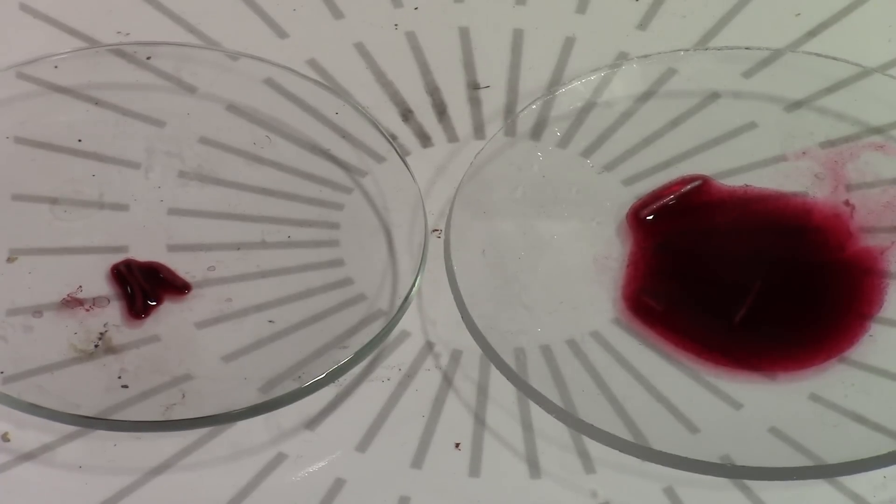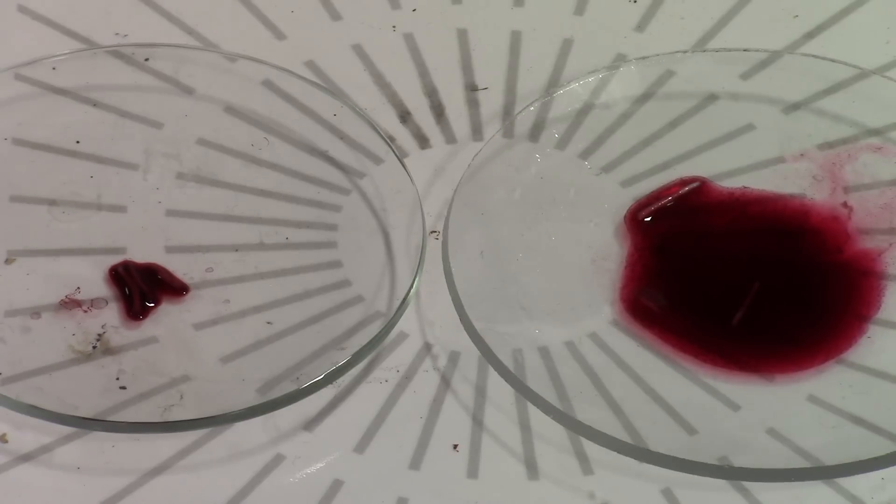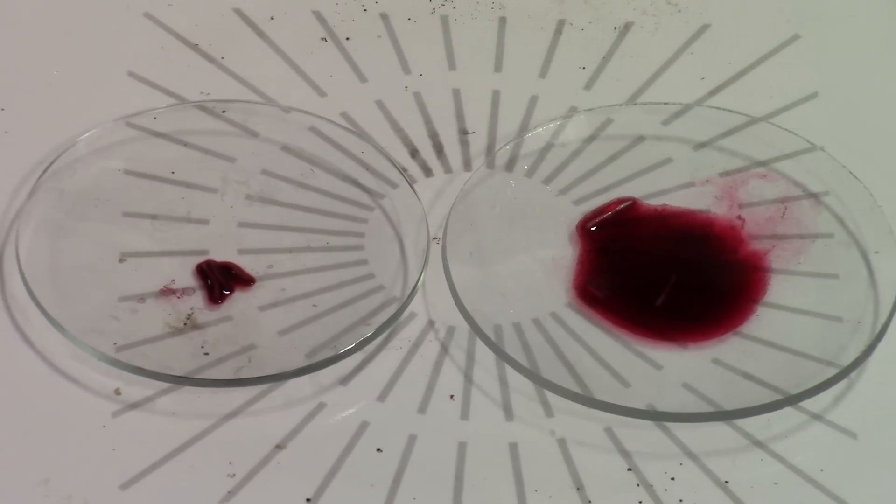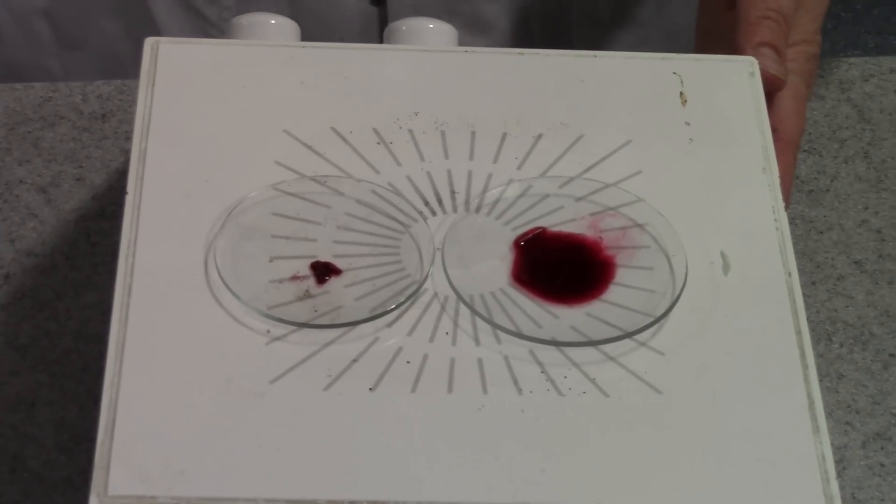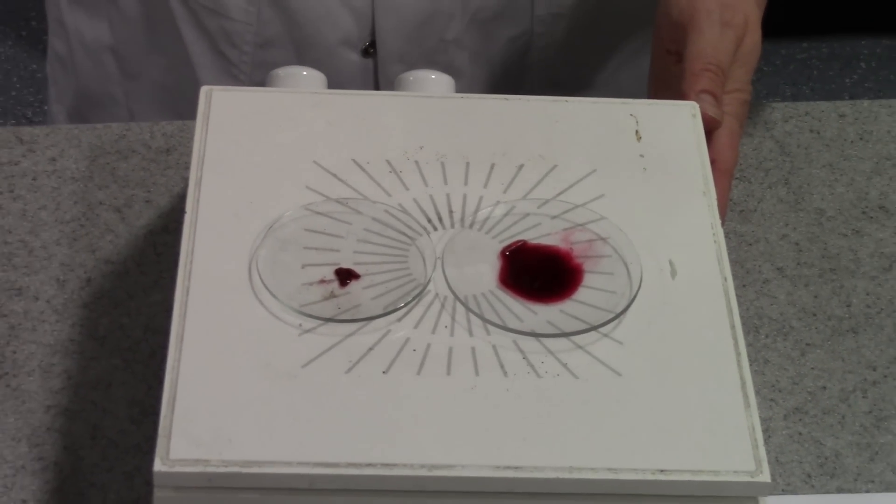Now, one of the questions you could be asked in an exam is why is it important to stain the root tips? The answer to this, of course, is that staining increases contrast so that the chromosomes become visible.